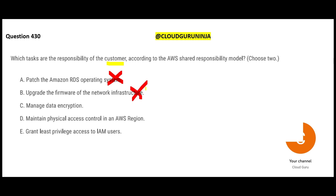Option B continued: Cisco cables or others - you cannot enter the premises of AWS. Option D is also wrong because maintaining physical access controls means there is a security guard who allows someone in and out of the AWS data centers. You will not have that access as a customer.